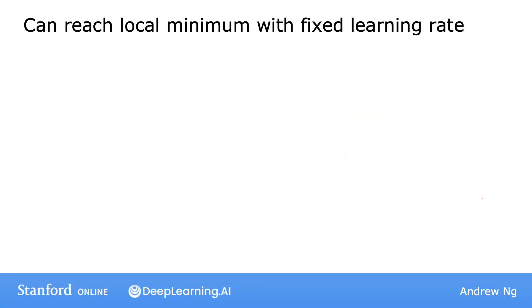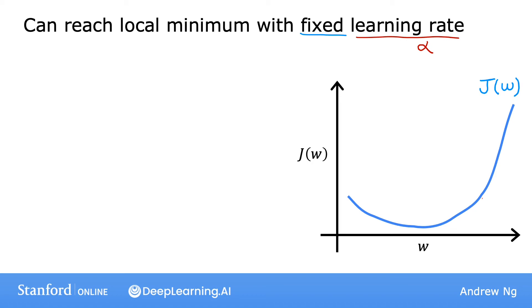This also explains why gradient descent can reach a local minimum, even with a fixed learning rate alpha. Here's what I mean. To illustrate this, let's look at another example. Here's the cost function j of w that we want to minimize. Let's initialize gradient descent up here at this point. If we take one update step, maybe it'll take us to that point. And because this derivative is pretty large, gradient descent takes a relatively big step.